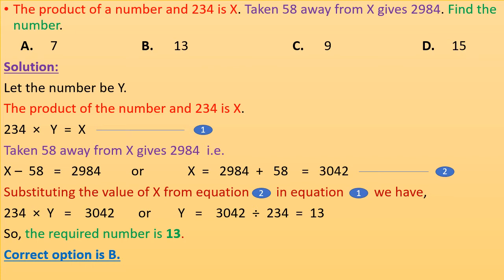Now substituting the value of X from equation 2 in equation 1, we have 234 × Y = 3,042, or Y = 3,042 ÷ 234 = 13. So the required number is 13. Correct option is B.